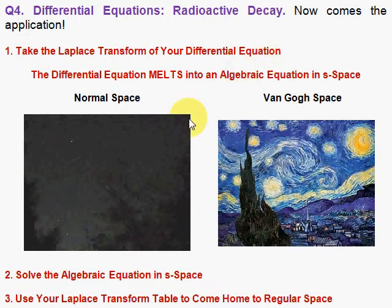This takes you from your regular space to Van Gogh space. This is the Laplace transformed space, and here, if we start with a variable, say t, and we have a function of t we're solving for through our differential equation, by taking the Laplace Transform, our equations melt. Our differential equations melt into algebraic equations. So the perception in Van Gogh space is quite different.